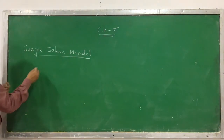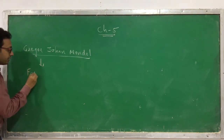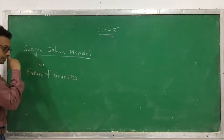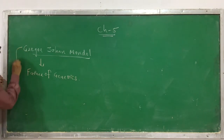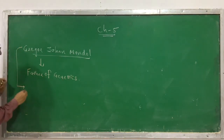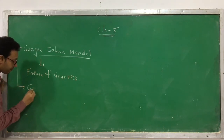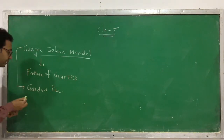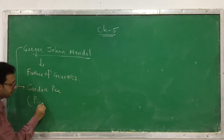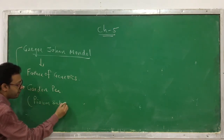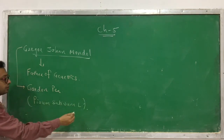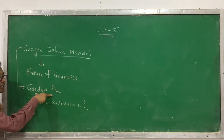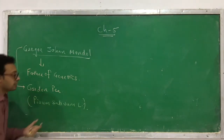That is why we call this person the Father of Genetics. Gregor Johann Mendel performed his experiments on a plant called garden pea — scientifically known as Pisum sativum L.